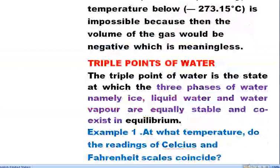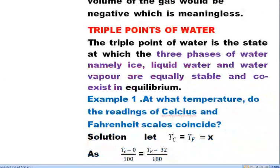The temperature, pressure, and volume at which a substance exists simultaneously in all three phases — solid, liquid, and gas — is termed the triple point. Here we discuss the triple point of water: the specific values of temperature, pressure, and volume at which water can exist as ice, liquid water, and water vapor simultaneously.